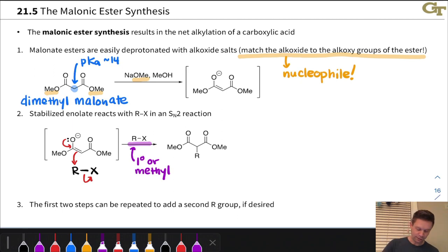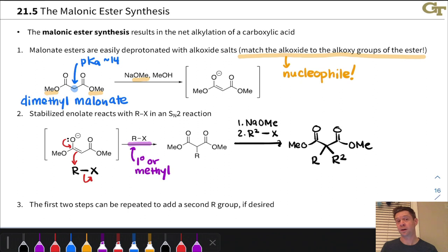We can actually repeat this again. Notice that there's another alpha hydrogen right here. So if we treat with the second equivalent of methoxide base, sodium methoxide, and then add potentially even a different alkyl halide, here I've labeled it R2-X, we can establish another carbon-carbon bond to a different alkyl group, R2. And there again, we want to make sure that that group is primary or methyl in the alkyl halide or pseudohalide used. So we've generated a really highly substituted product here with two R groups connected to the alpha carbon.